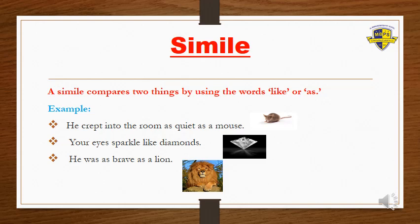A simile compares two things by using the words 'like' or 'as.' In the following examples, you will see things being compared using 'like' or 'as': 'He crept into the room as quiet as a mouse,' 'Your eyes sparkle like diamonds,' and 'He was as brave as a lion.'